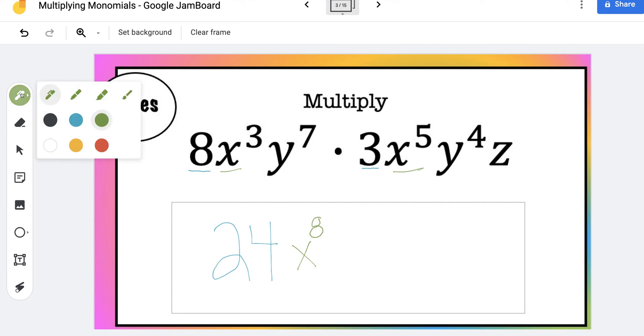And come over here and grab another color. Let's go with red. And y to the 7th times y to the 4th will give us y to the 11th.